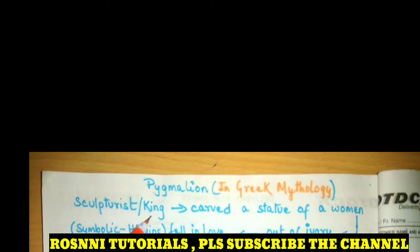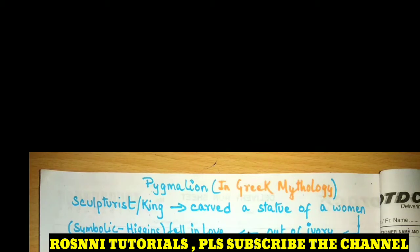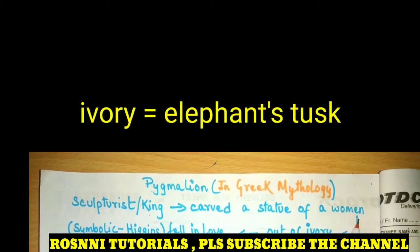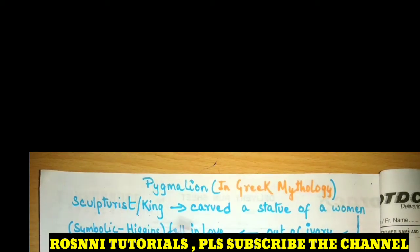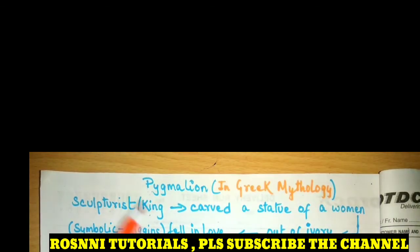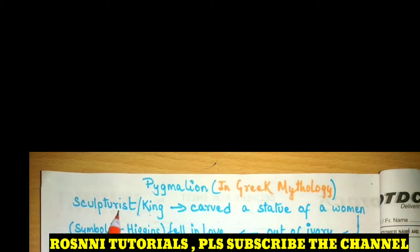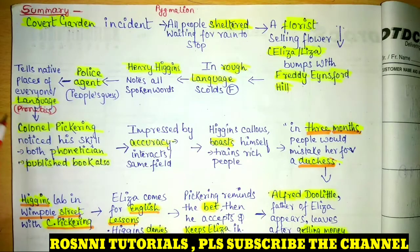In Greek mythology we find a story of Pygmalion — a king who was a great sculpturist. He carves out ivory and makes a beautiful statue of a woman, and with that beautiful creation he himself falls in love. The same thing is seen in the play as well, where this king or sculpturist is represented by Higgins.